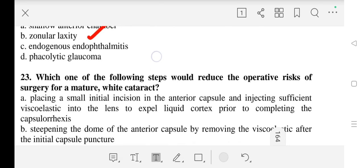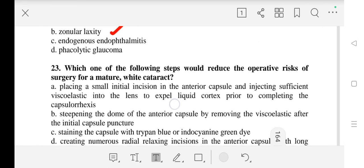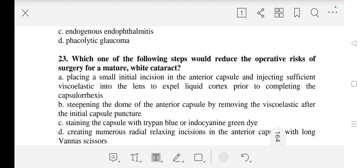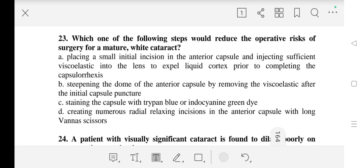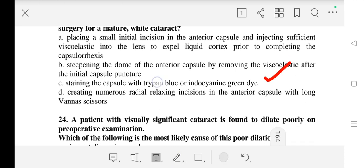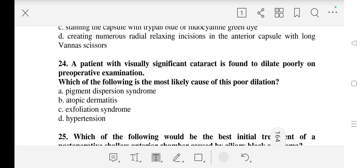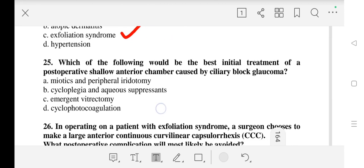Question number 23: Which of the following would reduce the operative risk of surgery for mature white cataract? Our correct answer is C - staining the capsule with trypan blue and indocyanine green dye. Question number 24: A patient with visually significant cataract is found to dilate poorly on preoperative examination. Which of the following is the most likely cause of this poor dilation? Our correct answer is C - exfoliation syndrome.